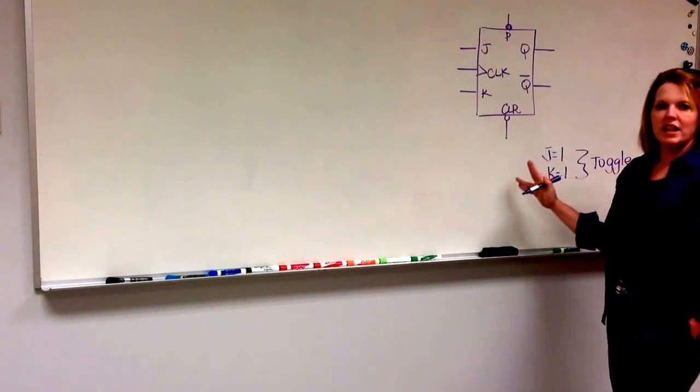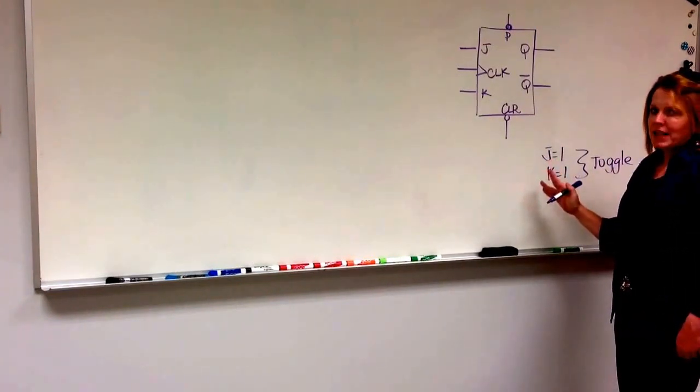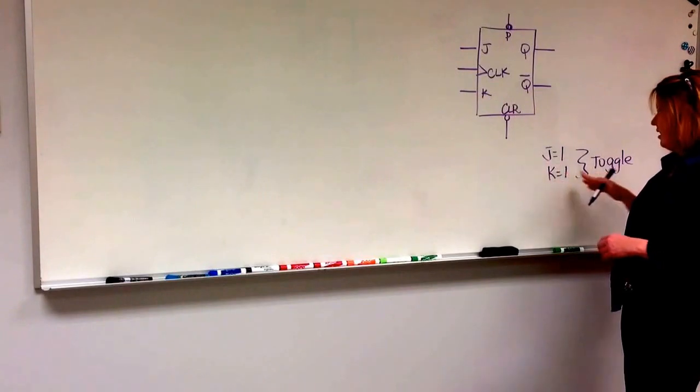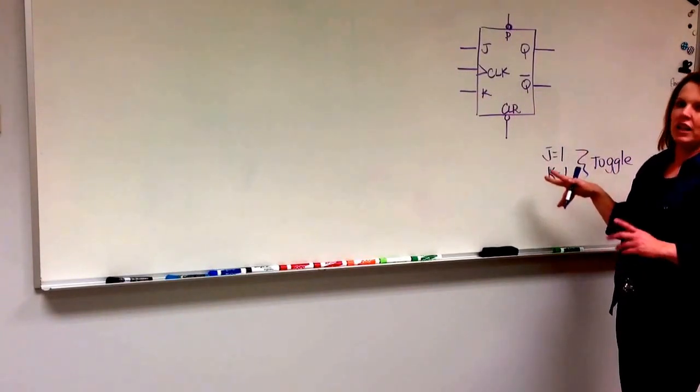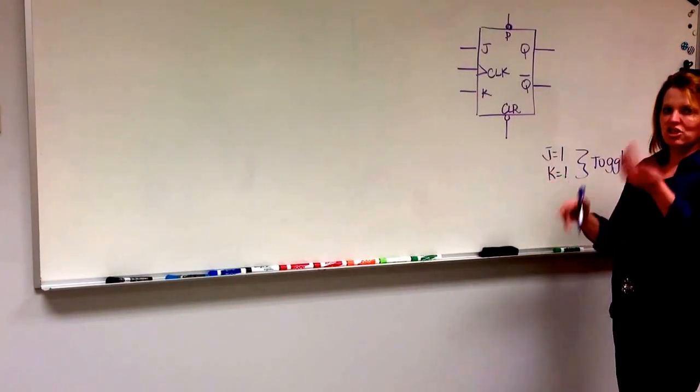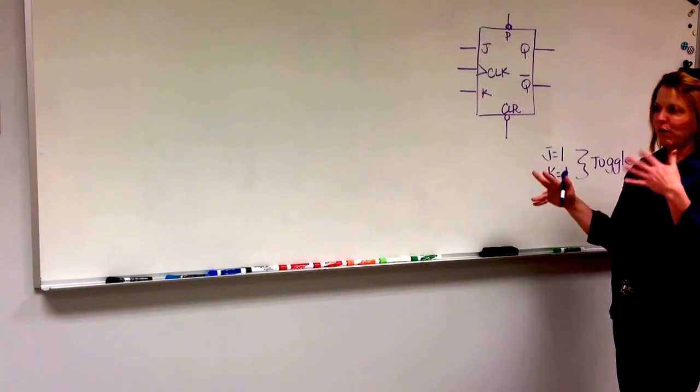So every time it comes past the rising edge of the clock in this case and J is 1 and K is 1, Q will just change states. It will just toggle from one state to the other.